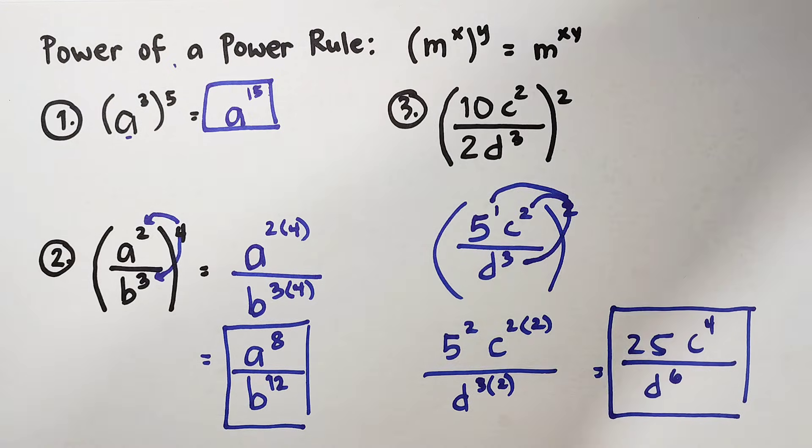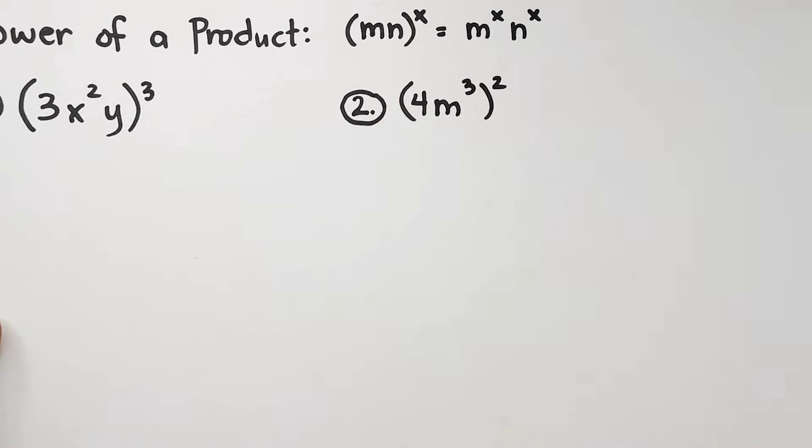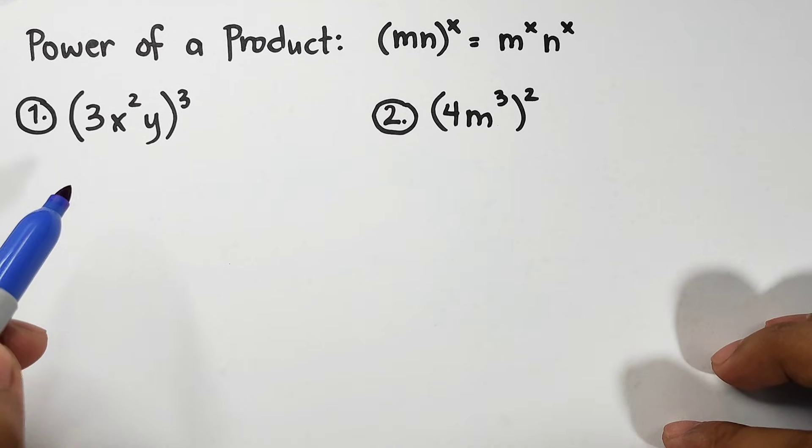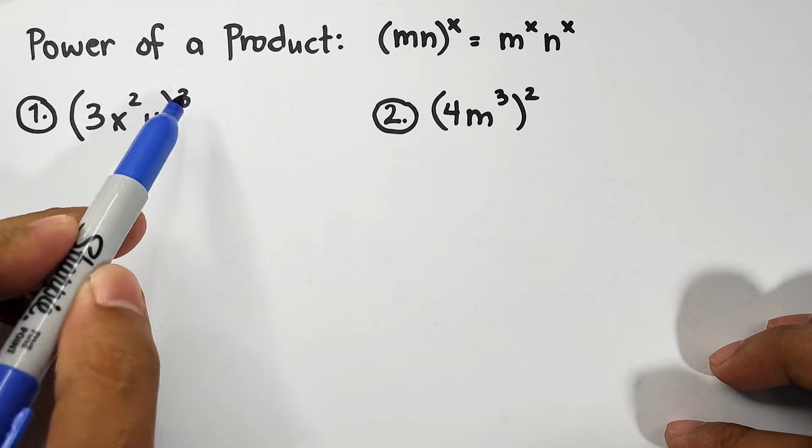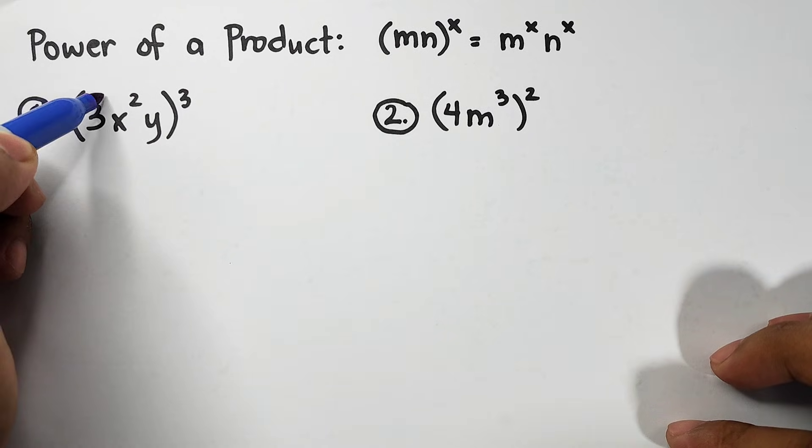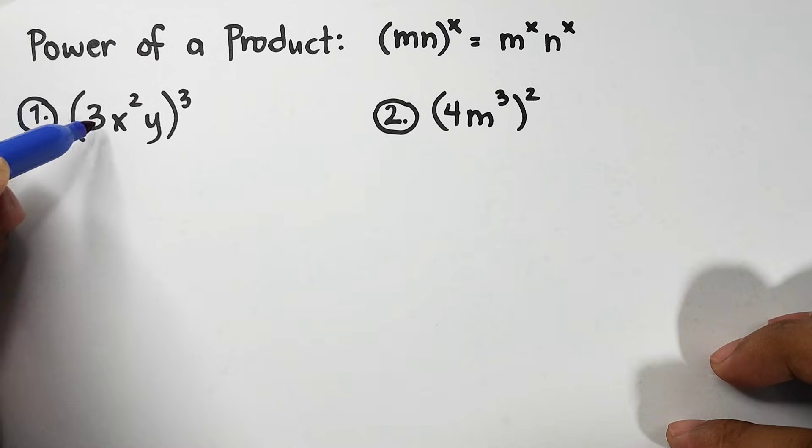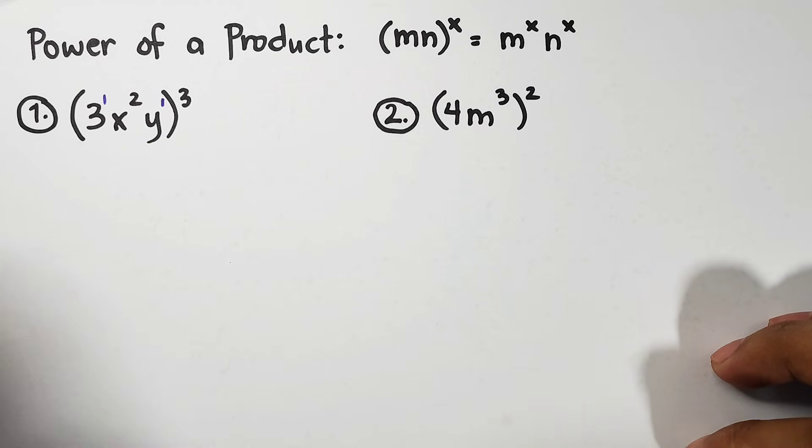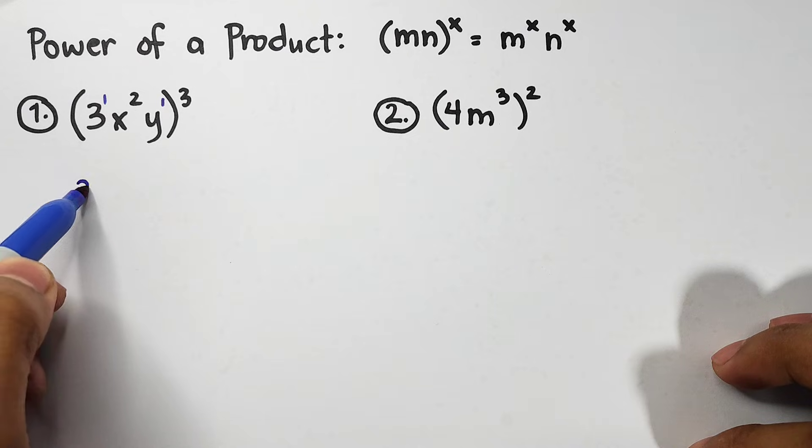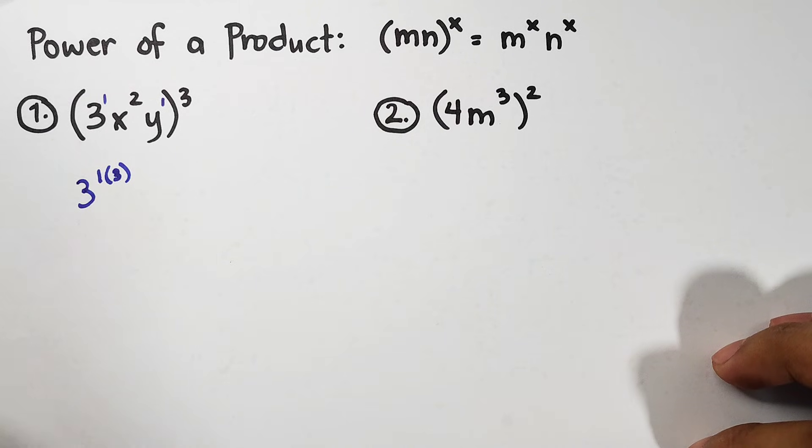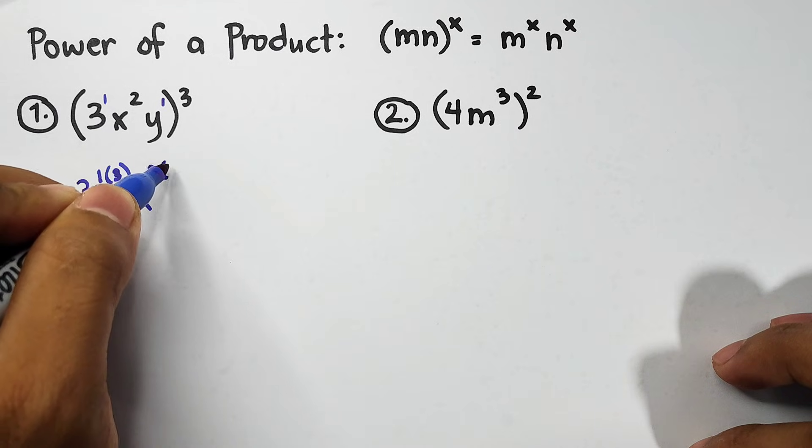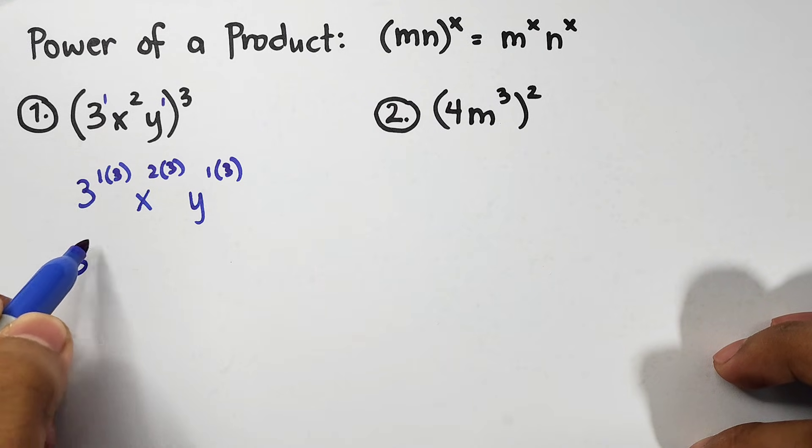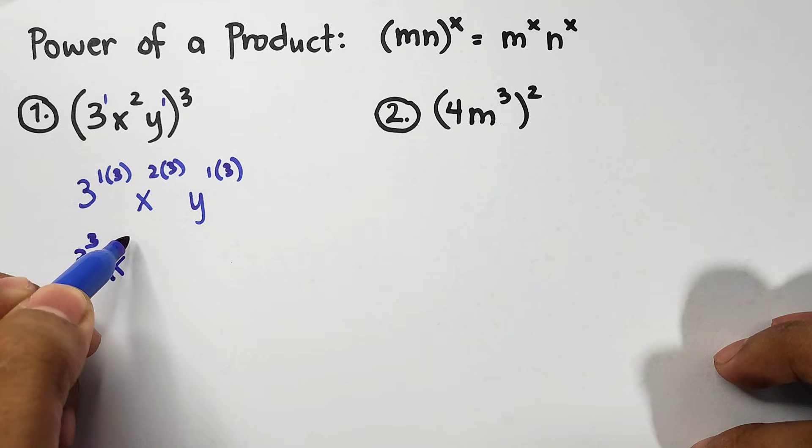Let's continue with the last law. We have here power of a product. Here, we have 2 or more bases with an exponent outside. So, it's simple. Here, 3x squared y raised to 3. The 3 is a base. So, we have an exponent of 1. Same with the variable y. When you don't see an exponent, automatic, that's an invisible 1. Let's distribute. Multiply. 3 raised to 1 times 3. I'm doing it step by step. Then, here, x squared times 3. Then, y raised to 1 times 3. Let's simplify. 1 times 3 is 3 cubed. Right? Here, this is x raised to the 6th power. Here, y raised to the 3rd power.